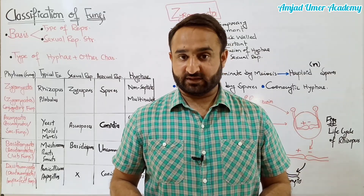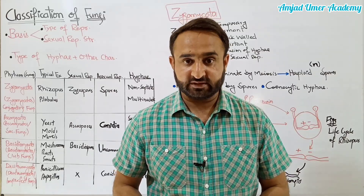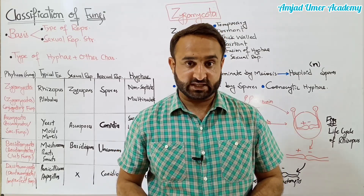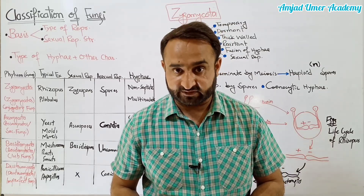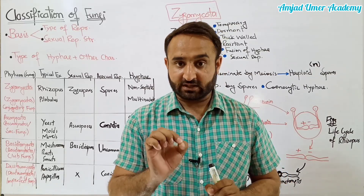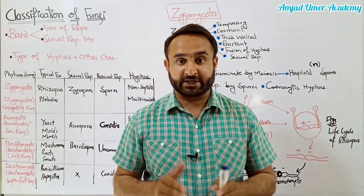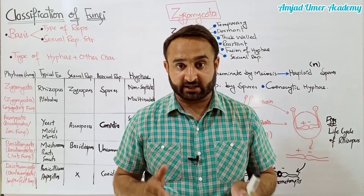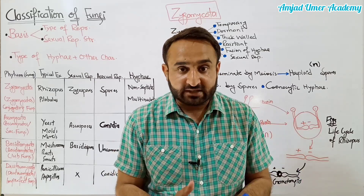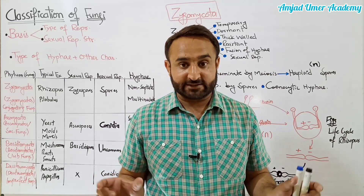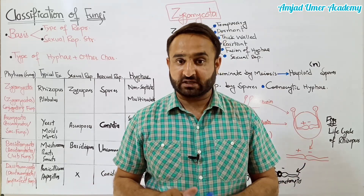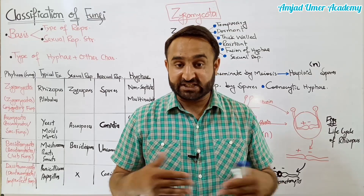Bismillahirrahmanirrahim, Assalamu Alaikum my dear students. We are talking about Chapter 8, First Year Biology: the Kingdom Fungi, the Kingdom of Recyclers. This topic is about the classification of fungi. The word classification means to make classes, groups, categories depending upon similarities and differences. Similar things are kept in the same group, while different things are kept in different groups.